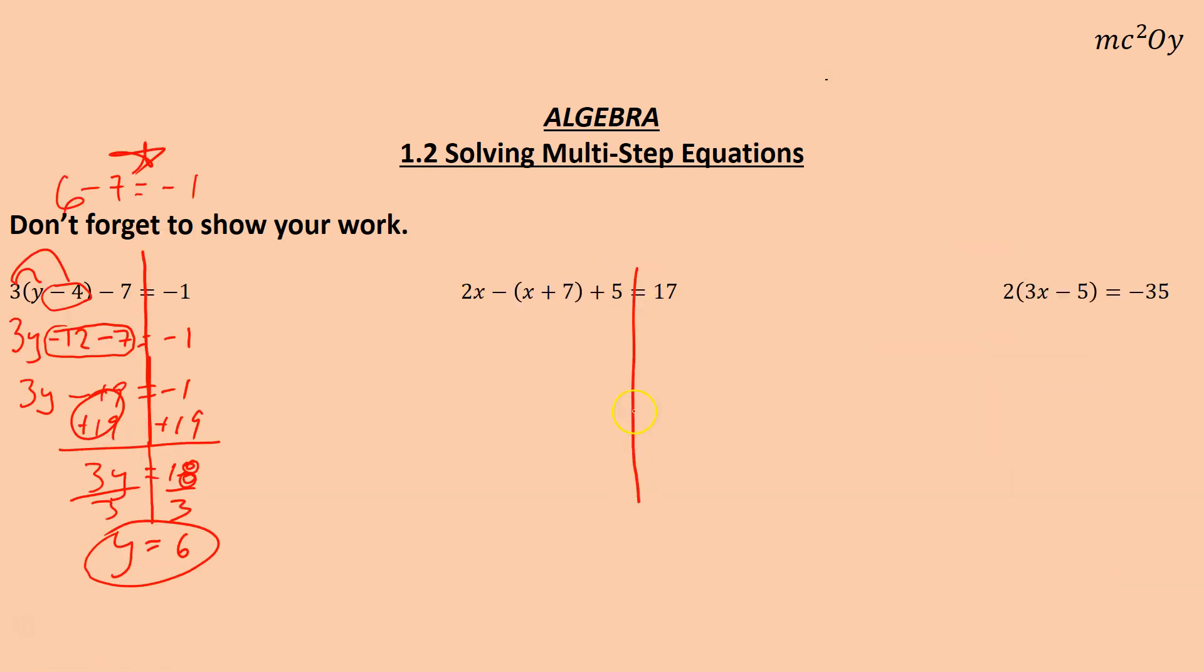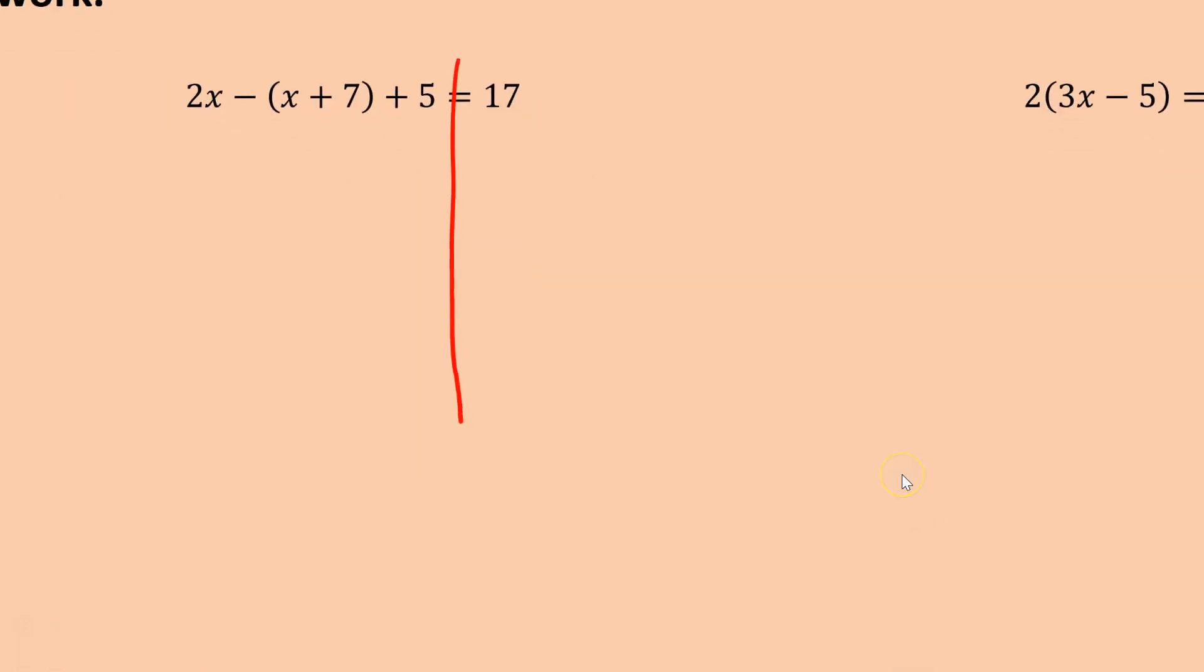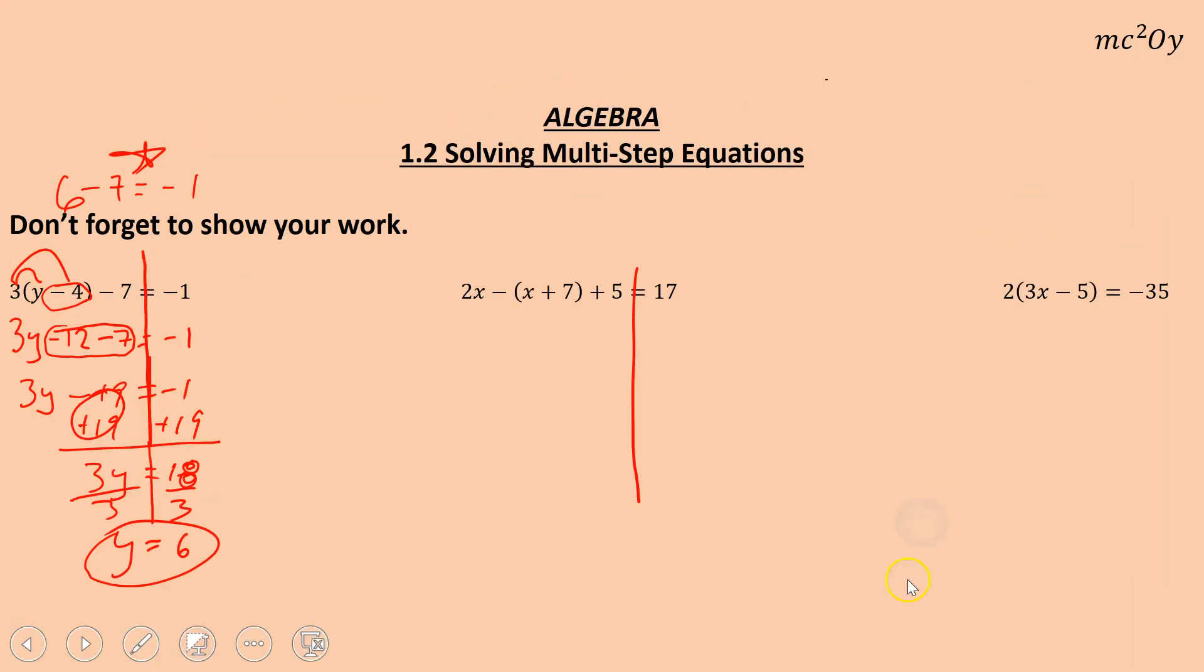So the next step here. You'll notice on this one there's a negative sign right outside that parenthesis. So we're going to bring in that negative. Negative and negative. So we end up with 2x. And negative times x is negative x, and negative times 7 is minus 7, plus 5 equals 17.